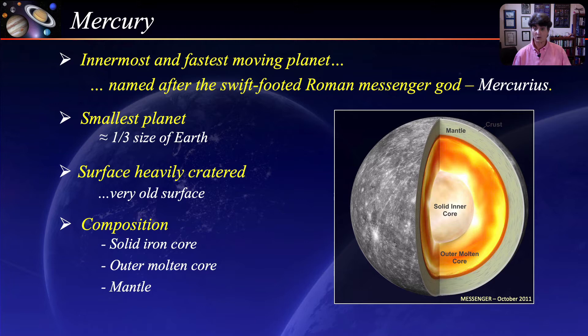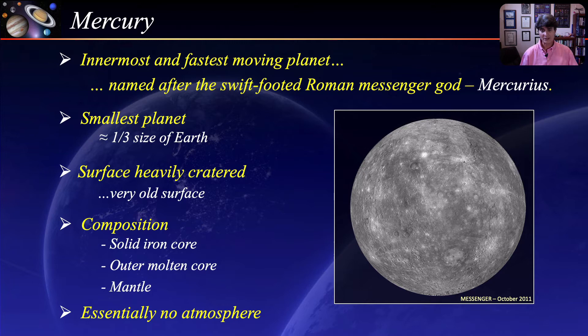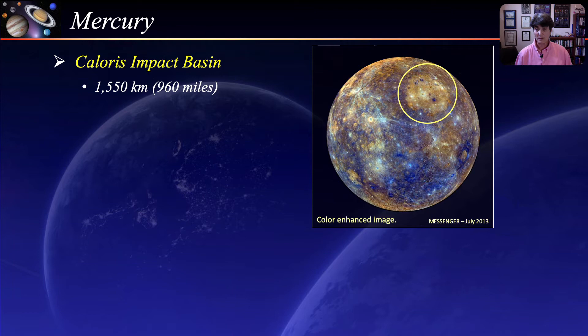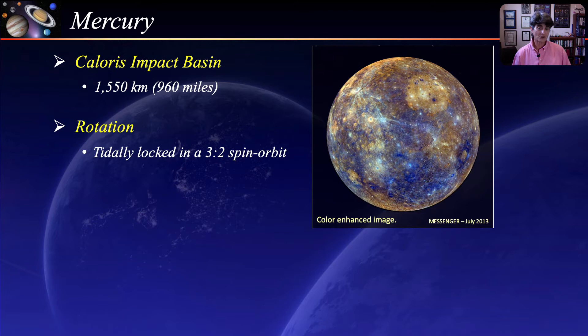This is a color-enhanced image to better contrast the surface features. Here we see the most dramatic of Mercury's surface features called the Caloris impact basin, one of the largest impact basins in the solar system. Mercury has a very slow and unique rotation — it is tidally locked with the sun in a 3 to 2 spin orbit resonance, meaning it rotates on its axis exactly three times for every two revolutions around the sun.